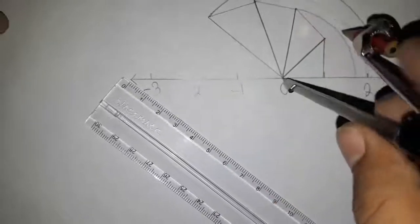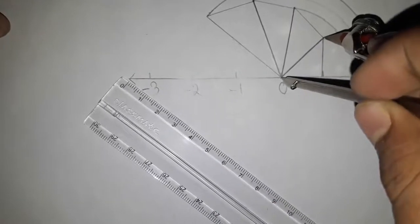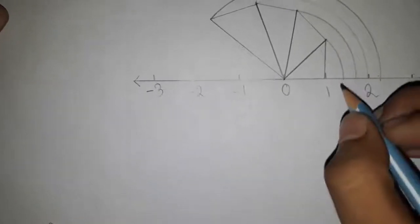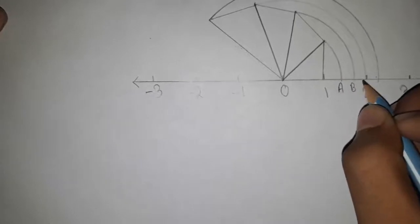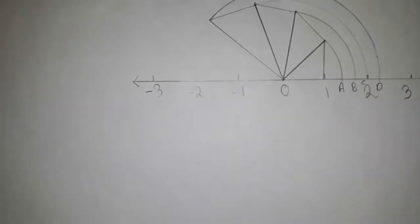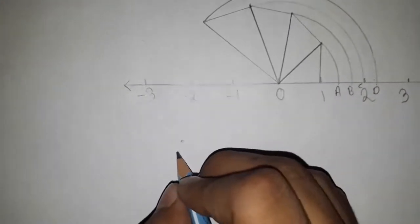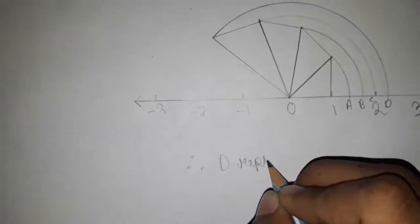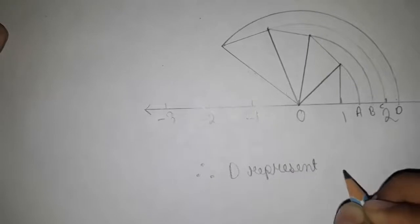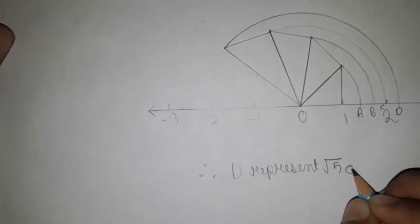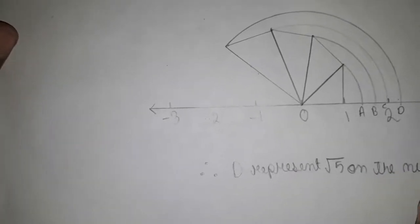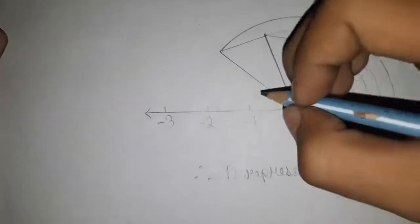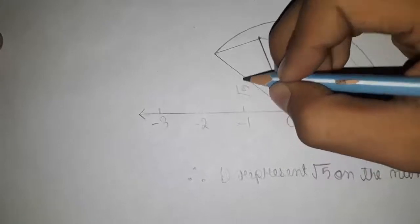Finally, now name it as A, B, C, and D. Therefore, D represents root 5 on the number line, and here you have to write root 5.